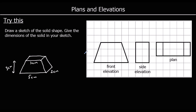That's the sketch of our solid with dimensions given. From the front you see a trapezium; from the side you see a rectangle with a width of 2 and a height of 3; and from the top — the plan — you can see the 3 by 2 rectangle on the top and the two slanted sides.